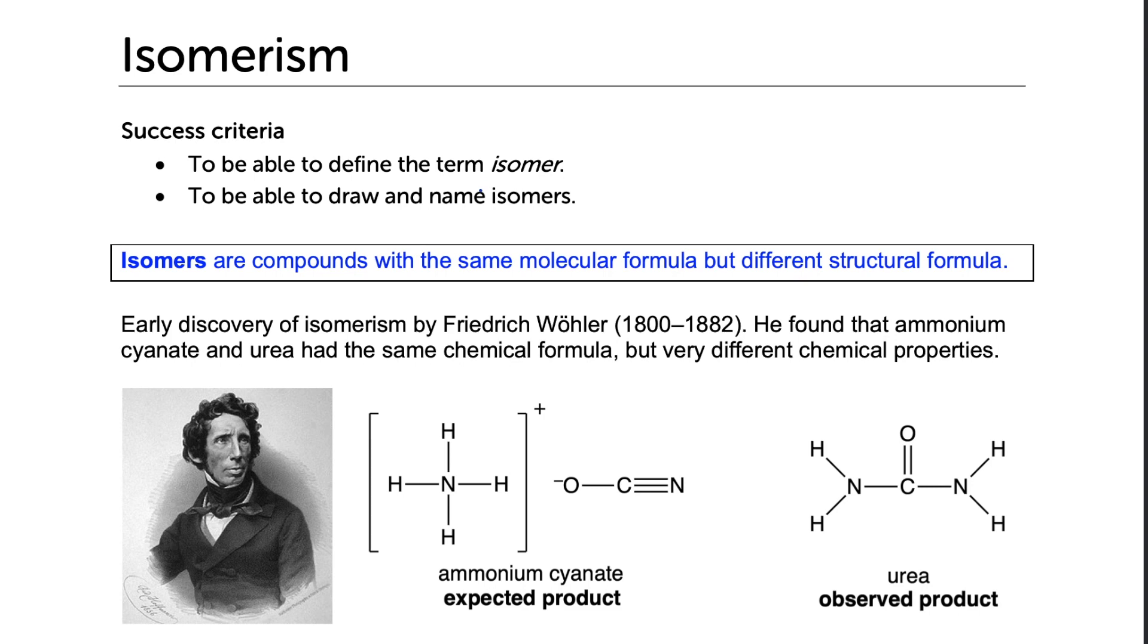The early discovery of isomerism can be traced back to the days of this German chemist known as Friedrich Wöhler, and he was trying to make this compound called ammonium cyanate in the lab, but instead, he made urea. And he found that ammonium cyanate and urea, they had the same chemical formula but very different chemical properties. Back then, it was believed that organic compounds could only be made in living things, but then his experiments disproved this belief. And this was where organic chemistry started.